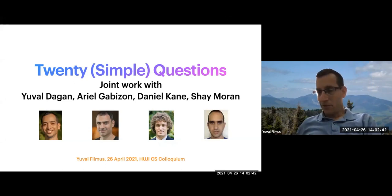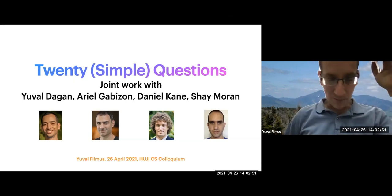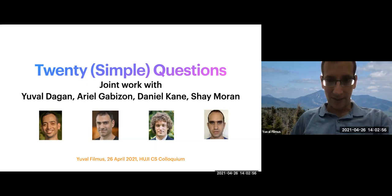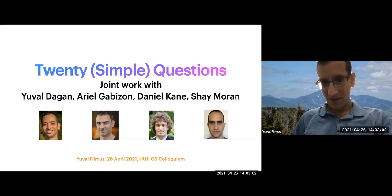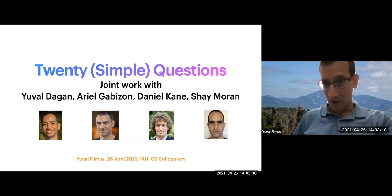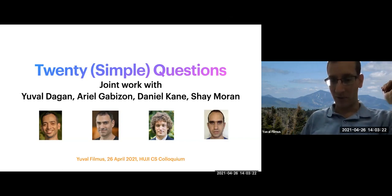This talk is about the game of 20 questions, which I will explain in a moment. This is a joint work with a bunch of people. There's Yuval Dagan, who was my master's student and now he's doing his PhD at MIT. Ariel Gabizon, who used to be at Zcash. Daniel Kane, he's at UCSD, and Chai Moran, who's actually now also at the Technion, at the math department. This is based on two different papers, one of which was accepted just a few months ago.